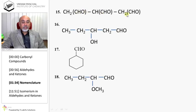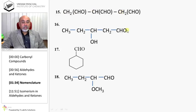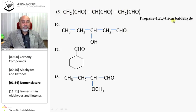Here there are three CHO groups on branches, and it is necessary to mention CHO as a major group. Therefore, as it is on the second carbon, we cannot select the longest chain of five carbons but must select only the longest chain of three carbons. So it is propane-1,2,3-tricarbaldehyde. When using carbaldehyde as a suffix for CHO, we do not include the carbon of CHO in the chain.